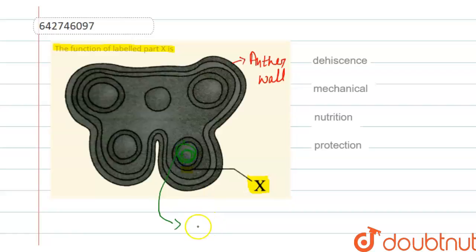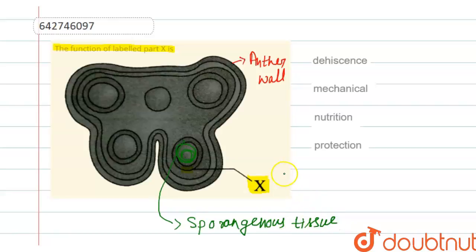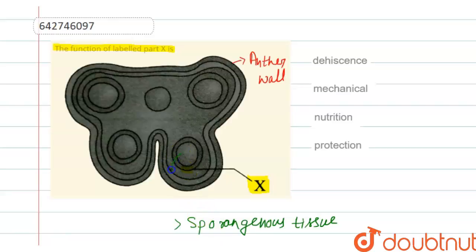At the center, the sporanginous tissue is present. It is in this sporanginous tissue that the growth and development of pollen grains occurs. This central part is the microsporangium.